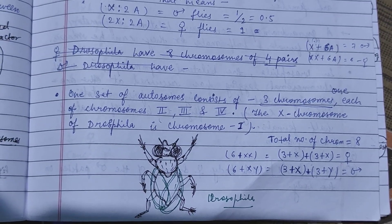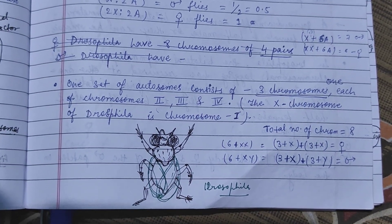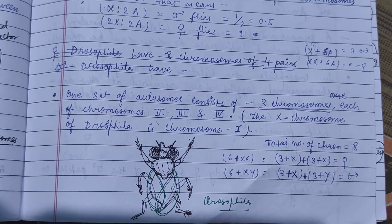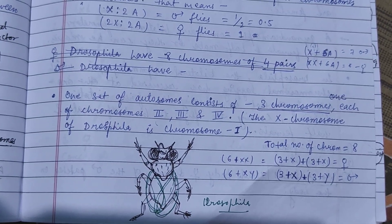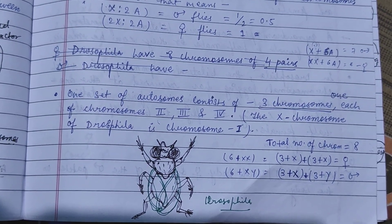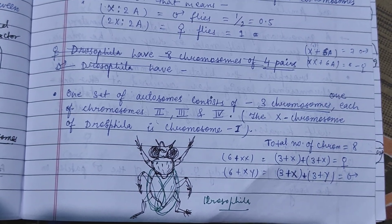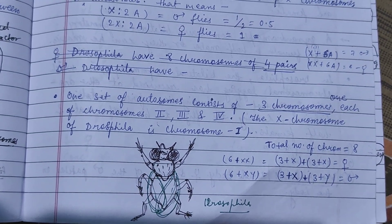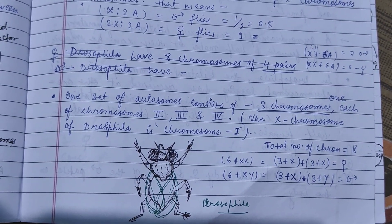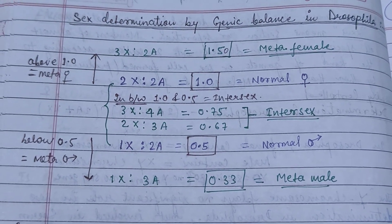The total number of chromosomes in Drosophila is eight. XX determines female and XY determines male, so 6 + XX and 6 + XY. Here is a chart of the genic balance of sex determination in Drosophila.